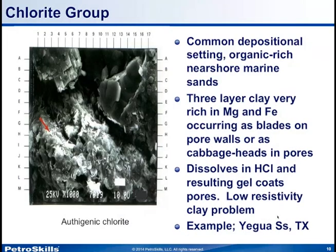The chlorite group is a common clay found in organic-rich marine sandstones. It's a three-layer clay rich in magnesium and iron, particularly sedimentary chlorite. It occurs as blades on pore walls or as cabbage heads in pores. The chlorite problem is that it dissolves in the presence of hydrochloric acid, and the resultant gel coats pore throats — that gel is largely insoluble and environmentally damaging. Therefore, it is a problem in low-resistivity reservoirs and is really the culprit clay for low-resistivity reservoir identification in Texas.